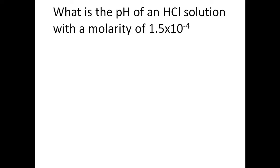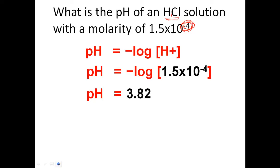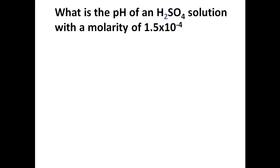Now I'm giving you an actual solution: a hydrochloric acid solution with molarity 1.5×10⁻⁴. Right away, recognize that HCl is monoprotic — it has one H that will dissociate. When given actual compounds, you need to determine whether the acid is monoprotic or polyprotic. The pH should be in the 3–4 range. When you plug and chug, you find the pH is 3.82 — in the ballpark of the negative exponent.